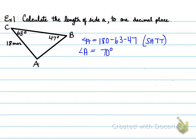Angle A is 70 degrees. We use SATT, sum of the angles in a triangle theorem, to solve for the angle. We're going to use angle A to solve. Sine A over a equals sine B over b equals sine C over c. That's your sine law formula.